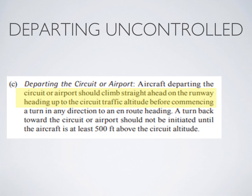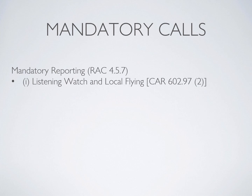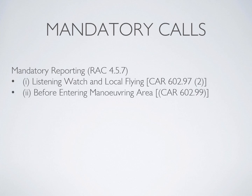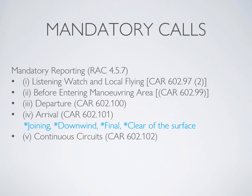The mandatory reporting requirements in a mandatory frequency area, according to RAC 4.5.7, are: you must listen to the mandatory frequency and maintain a listening watch before you enter a maneuvering area such as a taxiway or runway. On departure, make sure it's clear and safe to maneuver onto the runway, call before you move onto the runway, and let everyone know if there's going to be any delay prior to departure. On arrival, make the call five minutes before entering the area if possible, giving your intentions. The main calls they also want are when joining the aerodrome traffic circuit, when on downwind, when on final, and when clear of the surface. If doing continuous circuits, the same calls apply. Also report if you're flying through the mandatory frequency area — five minutes out, state your intentions, then report when clear of the area.